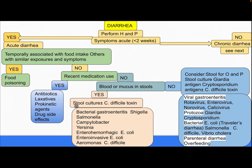If there is no recent medication use, is there blood or mucus in the stool? If yes, perform stool culture with or without C. difficile toxin. Differential diagnosis includes bacterial gastroenteritis: Shigella, Salmonella, Campylobacter, Yersinia, or enterohemorrhagic E. coli. If there is no blood or mucus and it is not these causes, consider parenteral diarrhea or overfeeding.